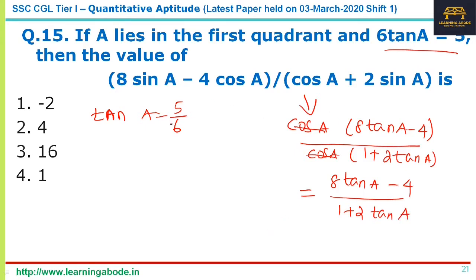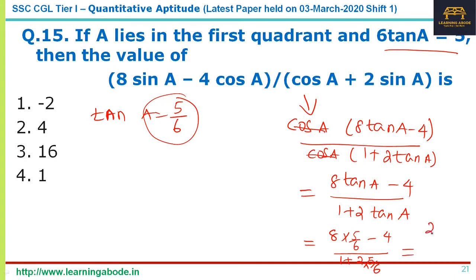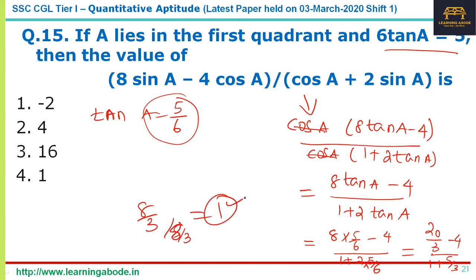Substituting tan A = 5/6: numerator = 8×(5/6) − 4 = 20/3 − 4 = 8/3. Denominator = 1 + 2×(5/6) = 1 + 5/3 = 8/3. So 8/3 divided by 8/3 equals 1. The answer is 1, answer choice 4 for question number 15.